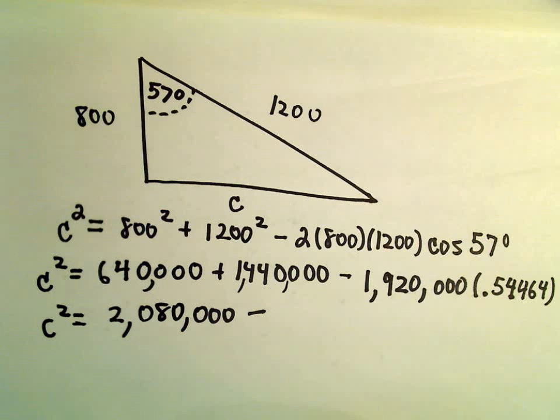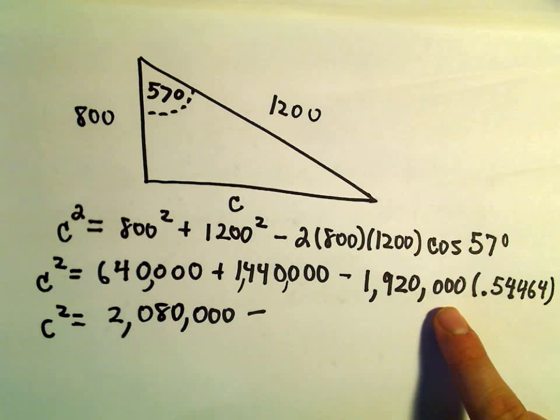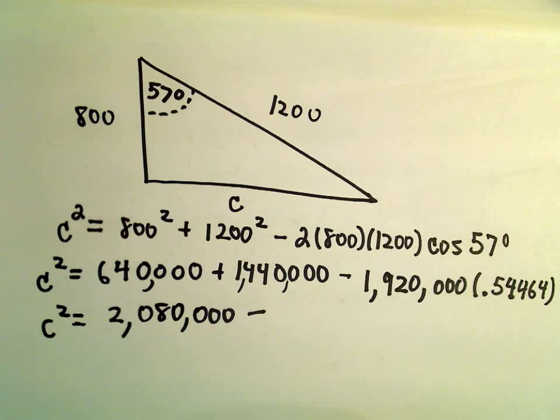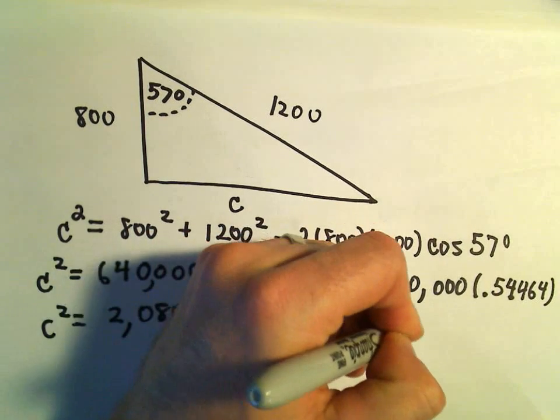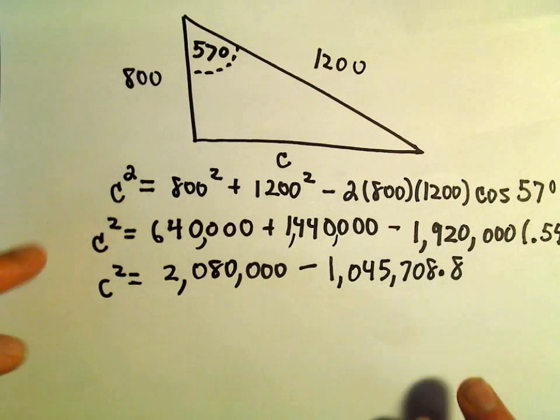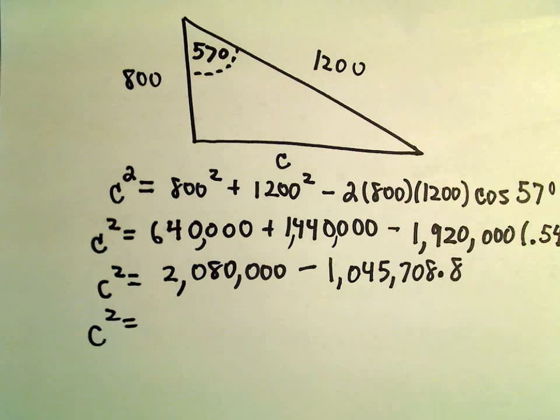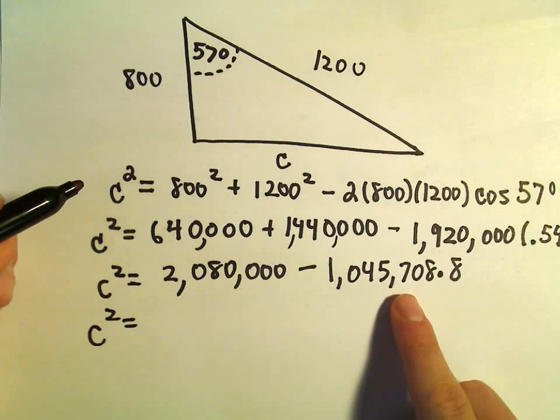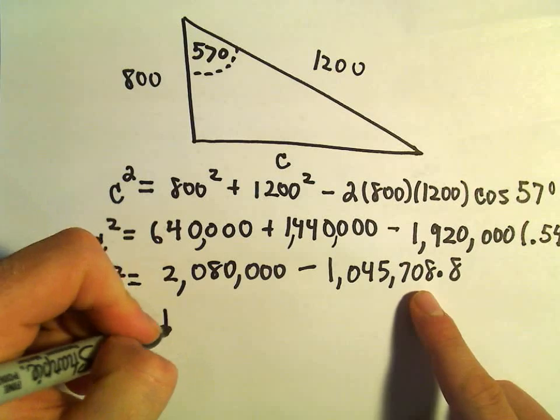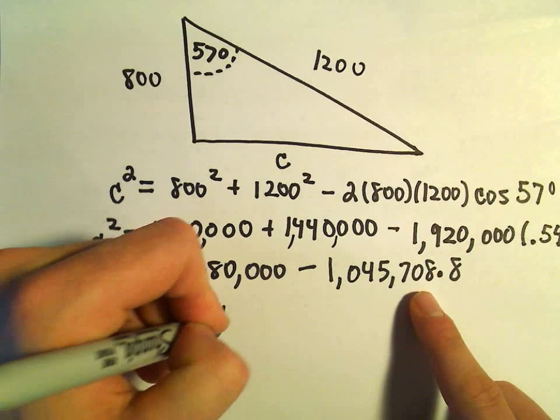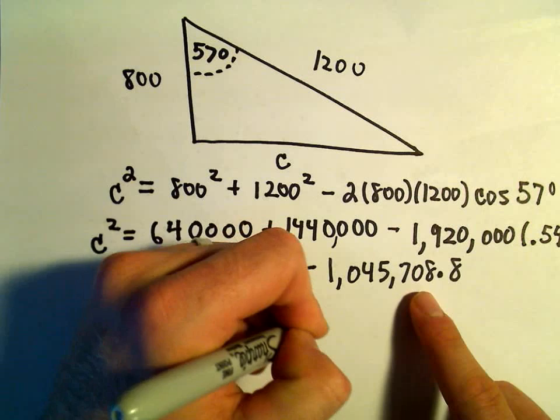We can take our 1,920,000, multiply that by 0.54464. I'm getting that to be 1,045,708.8. Almost there. Let's do the subtraction. If we subtract 2,080,000 minus 1,045,708, I'm getting this to be 1,034,291.2.